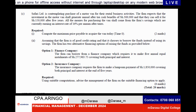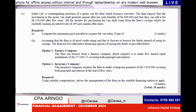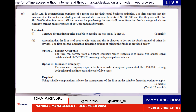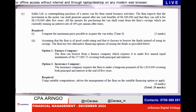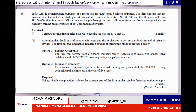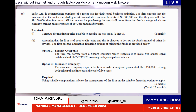Looking at the required: part one, we are required to compute the maximum price payable to acquire the van today, which is time zero. Then, assuming the firm chooses to borrow the funds instead of using savings, the firm has two alternative financing options: option one, finance company; option two, insurance company. Using suitable computation, advise the management of the firm of the suitable financing option to apply.